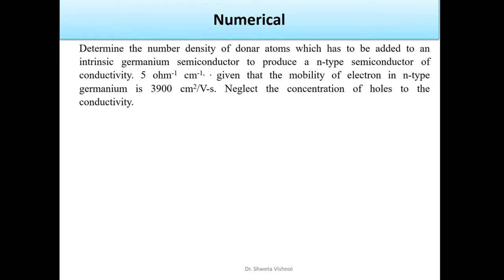Given that the mobility of electrons in n-type germanium is 3900 centimeter squared per volt second. Neglect the concentration of holes in n-type semiconductor.